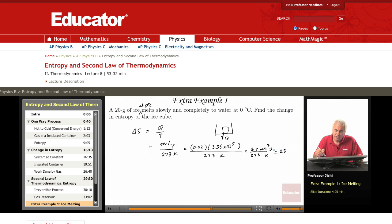The answer is about 25 joules per Kelvin, so this is a change in entropy. It's an increase in entropy, as you see, delta S is positive.